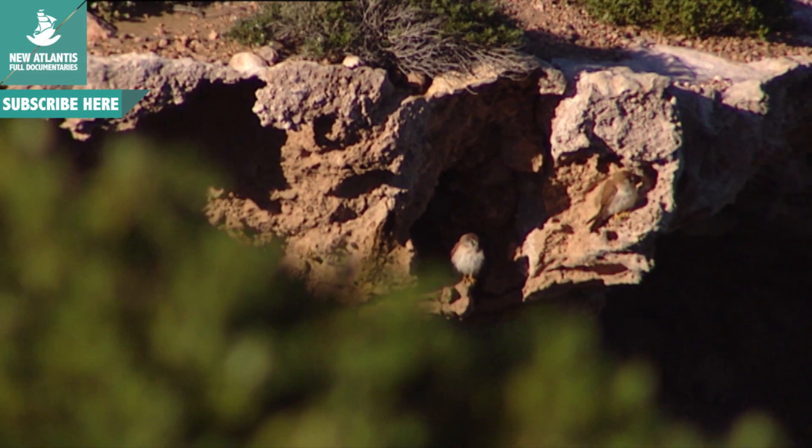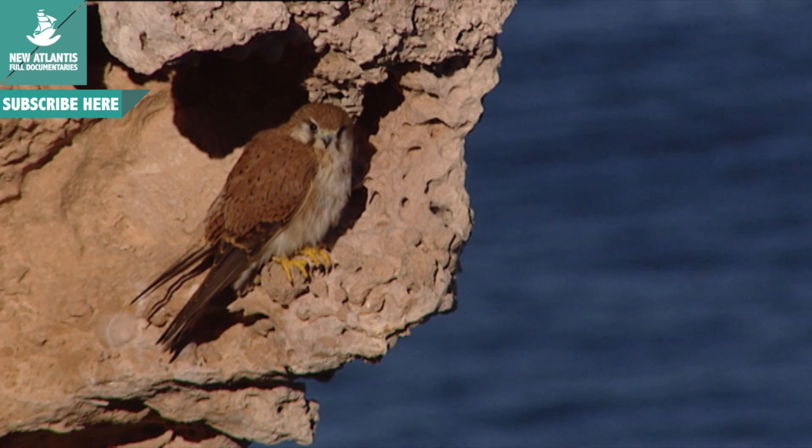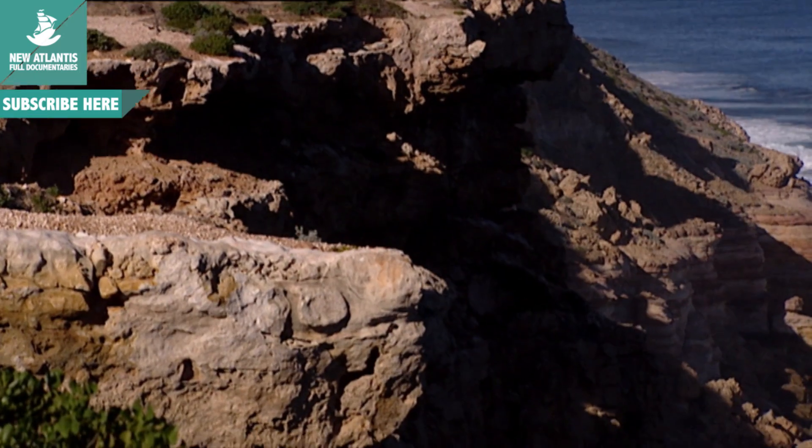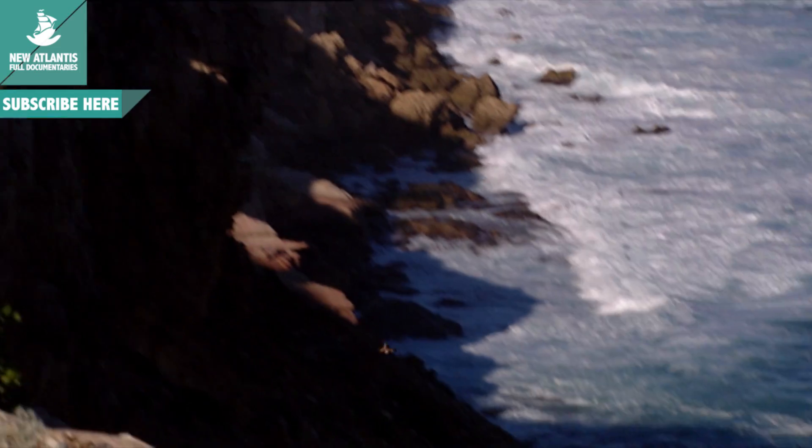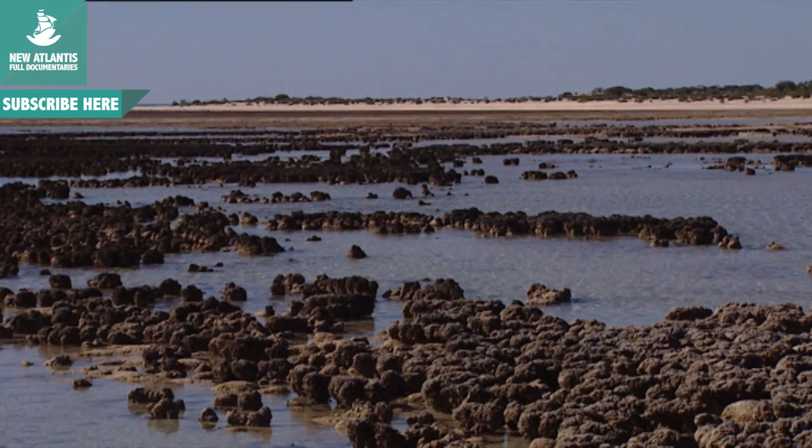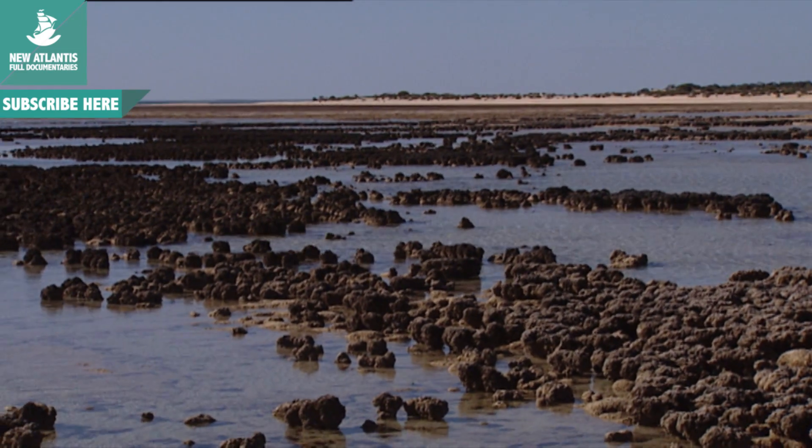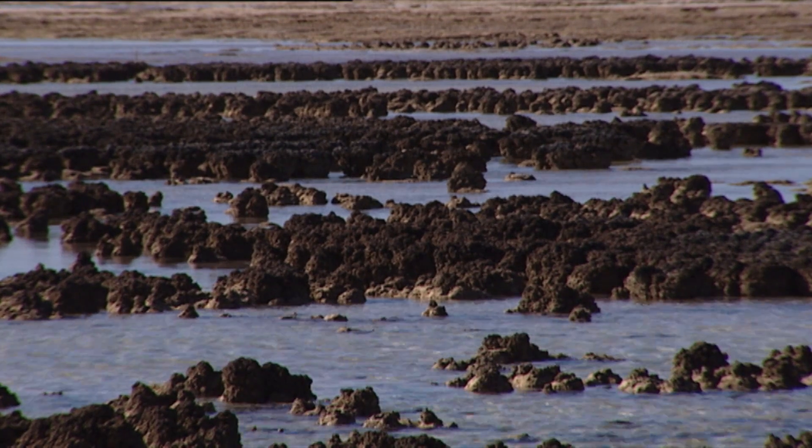The first evidence of descendants of Luca was found in the warm region of Pilbara, in Western Australia, one of the oldest geological areas of the planet. These fossil remains, formed by successive layers of bacterial sediment, date back 3.5 billion years.